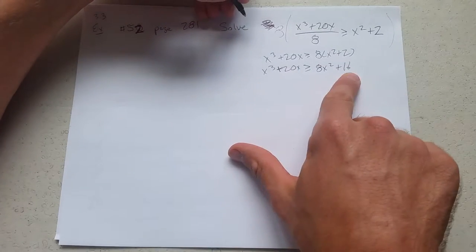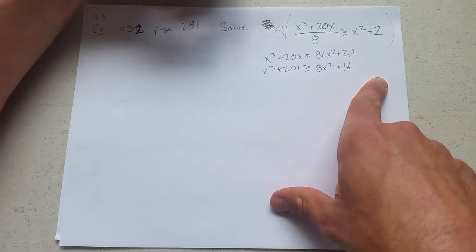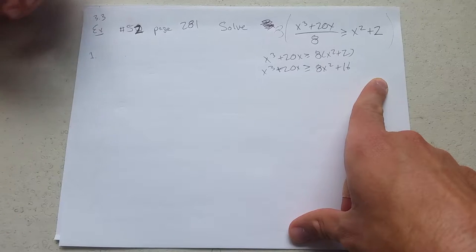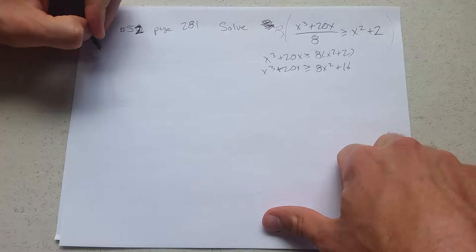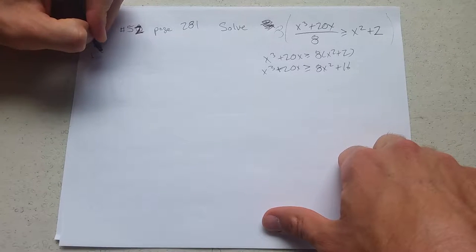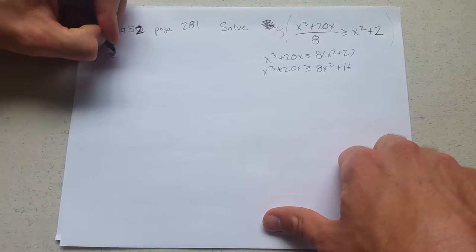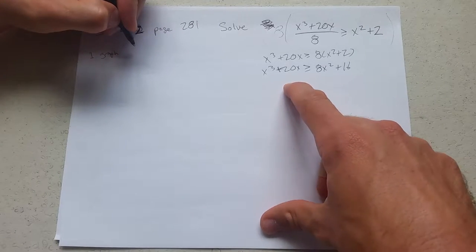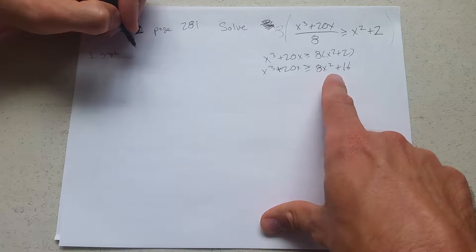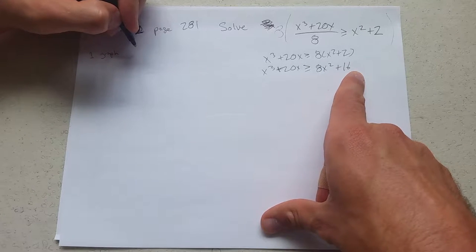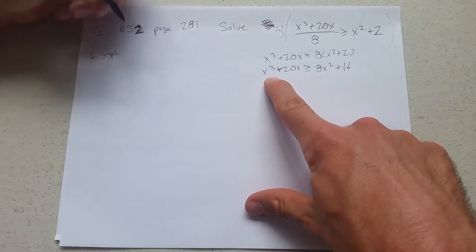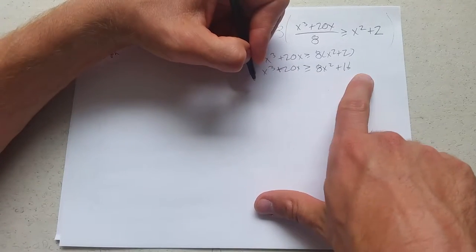How in the world do we solve this? So here's the steps we're going to take. Step 1, we're going to graph, which is going to take a little while. Now what are we going to graph? We need to get all terms on one side. I like to keep my highest power positive, which is x cubed. So I'm going to subtract everything on the right side.